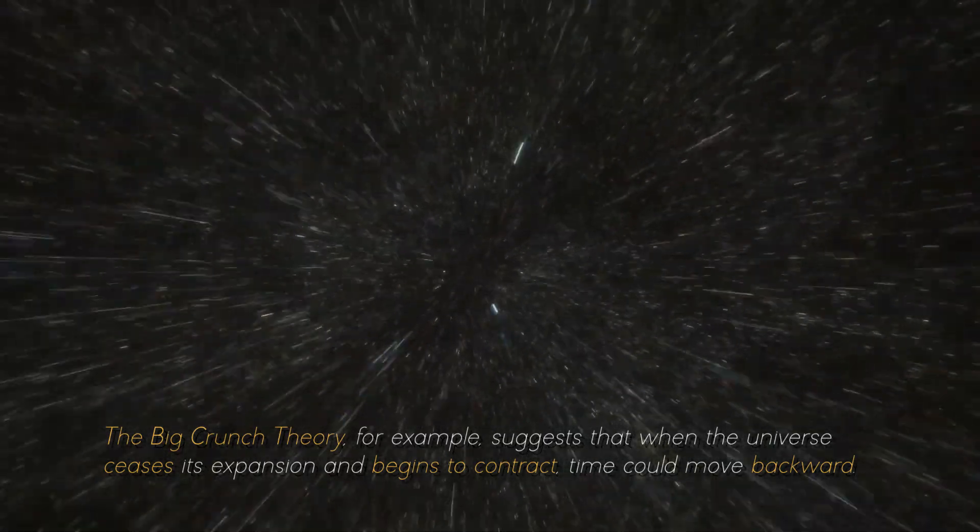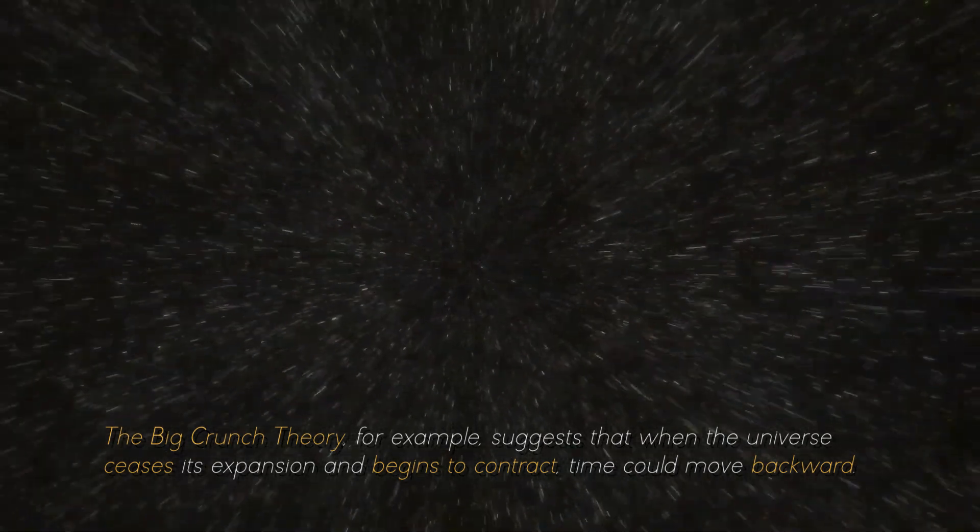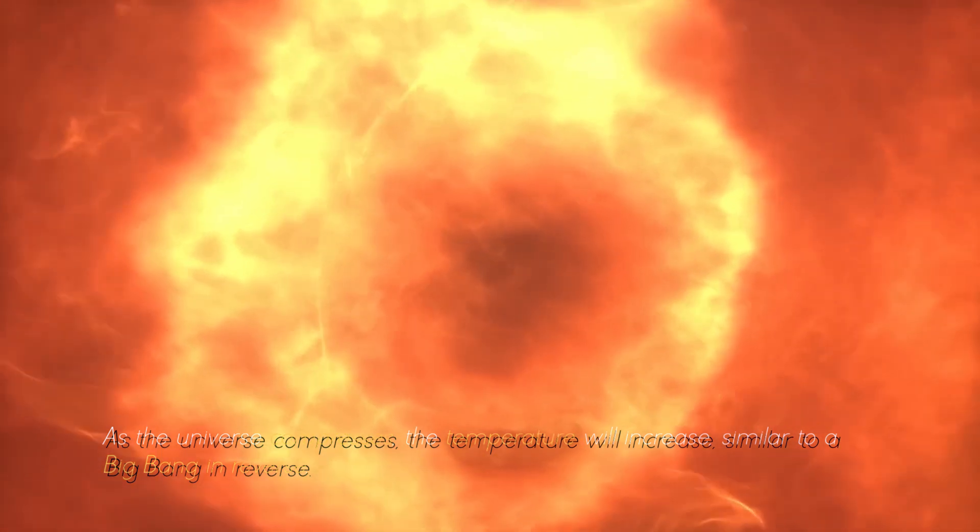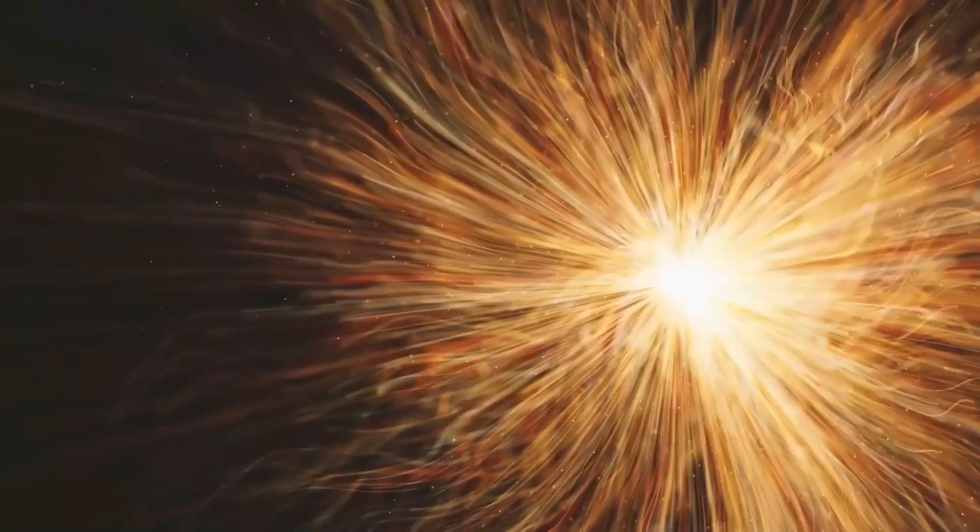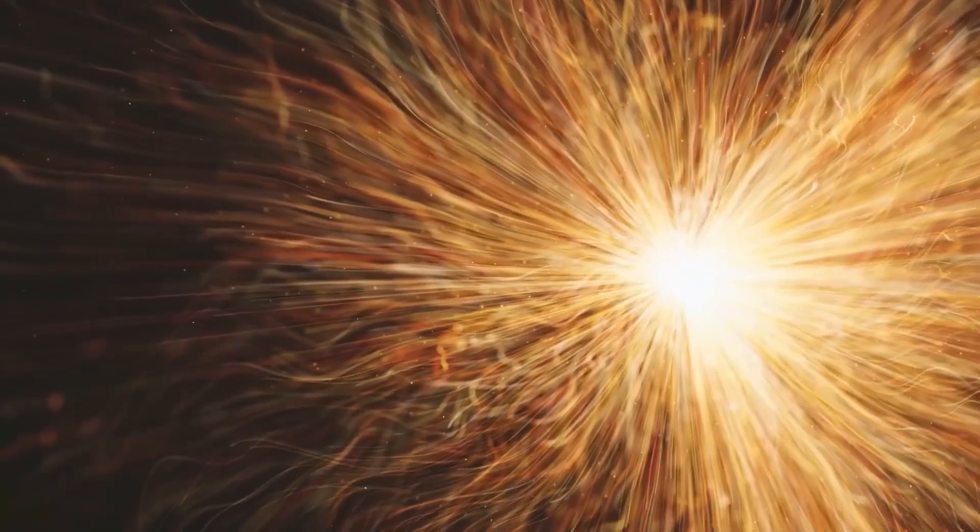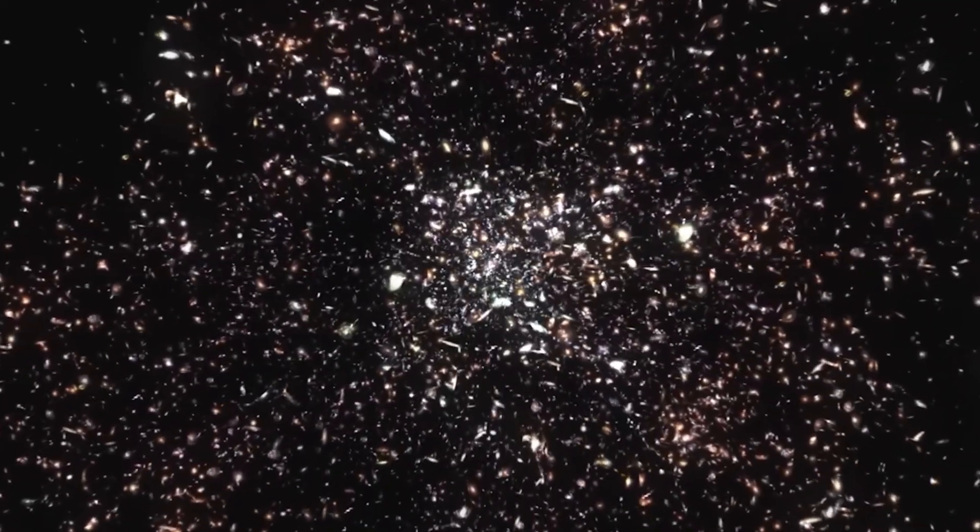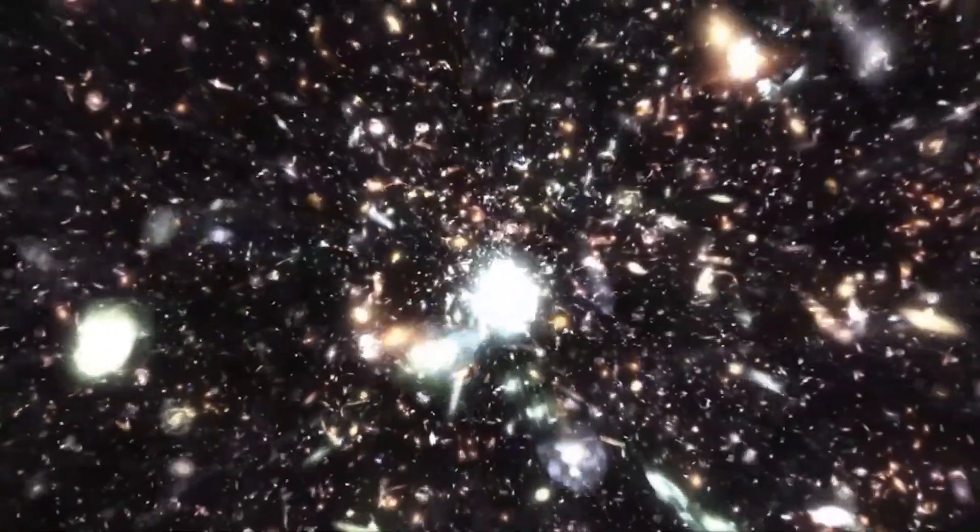The Big Crunch theory, for example, suggests that when the universe ceases its expansion and begins to contract, time could move backward. As the universe compresses, the temperature will increase, similar to a Big Bang in reverse. Now, what happens after the Big Crunch is a question that has puzzled many of us. Several theories raise the possibility that a new universe could arise from another Big Bang, while others suggest that our universe could reappear at another point, as if it were a cosmic bubble. There are even hypotheses that this cycle could repeat itself over and over again, giving rise to countless universes.